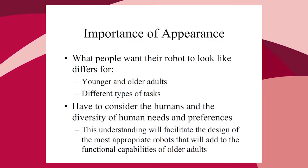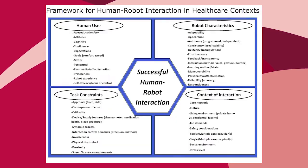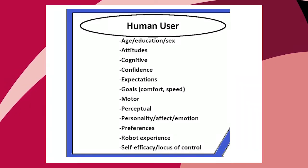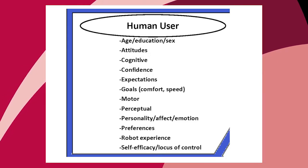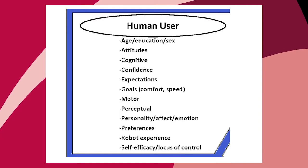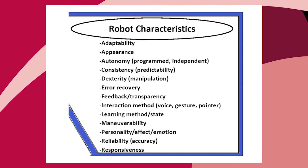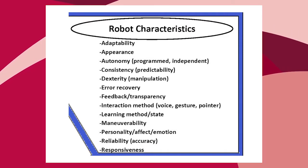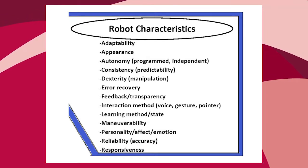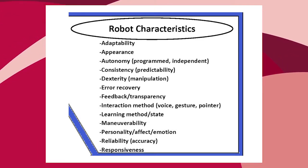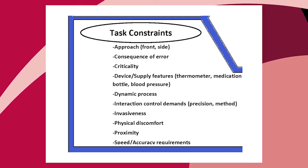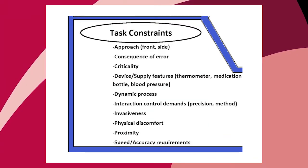We are developing a framework for human-robot interaction in the context of health care. Human user characteristics are important, as are robot experience and preferences, and all the characteristics of the robot itself. You can think of this as a team — the human and robot acting together. The human needs to know about the robot's capability, consistency, predictability, and reliability. Task context matters too: whether the robot uses a thermometer or medication bottle, involves physical proximity, or potential discomfort.